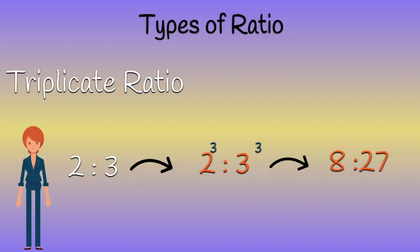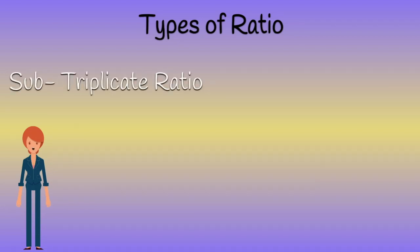Finally, we are going to see about sub-triplicate ratio. If a to b is a ratio, then its sub-triplicate ratio is cubic root of a to cubic root of b. For example, if eight to twenty-seven is a ratio, then its sub-triplicate ratio is two to three.